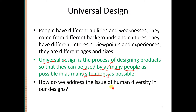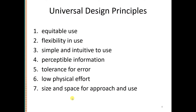Our objective is that the system should be usable in many situations. For example, we should be able to control the illumination or brightness so that we can use our mobile phone both indoors and outdoors where sunlight is more intense. So how do we address the issue of human diversity in our design? The seven principles of universal design are: Equitable Use, Flexibility in Use, Simple and Intuitive to Use, Perceptible Information, Tolerance of Error, Low Physical Effort, and Size and Space for Approach and Use.